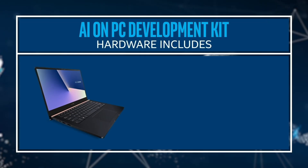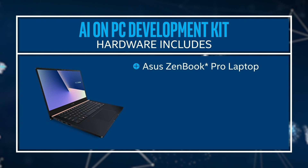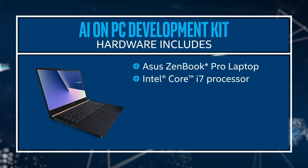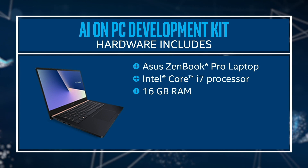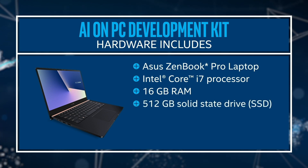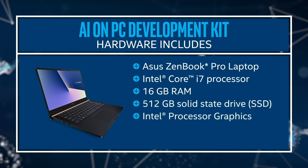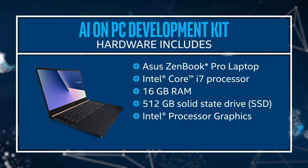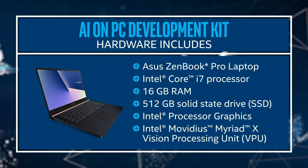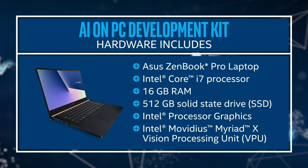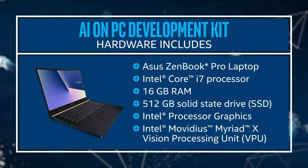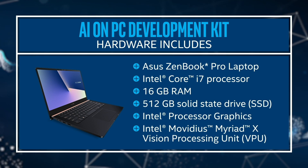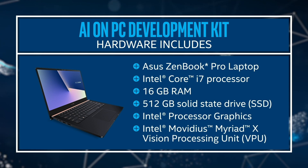The AI on PC Development Kit hardware is an ASUS ZenBook Pro laptop with an Intel Core i7 processor, 16 gigabytes of RAM, a 512 gigabyte solid state hard drive, and Intel processor graphics. A unique feature is that it includes an internal Intel Movidius Myriad X VPU as an M.2 card. The platform supports AI application development using the CPU, the integrated GPU, and the VPU.